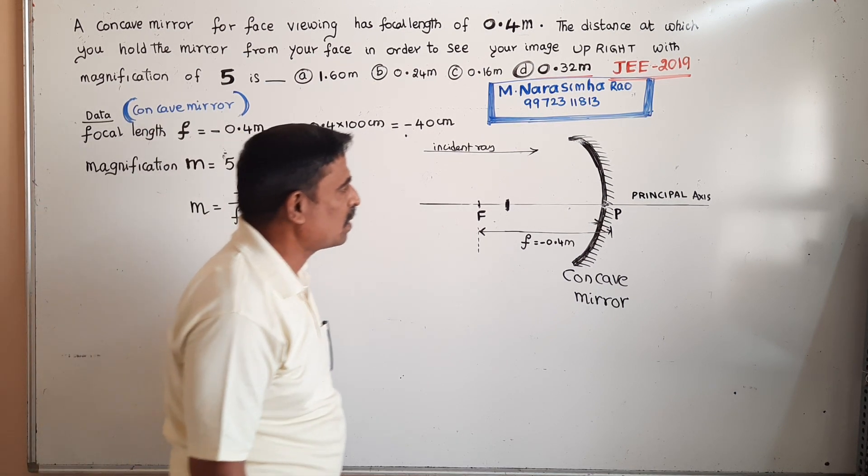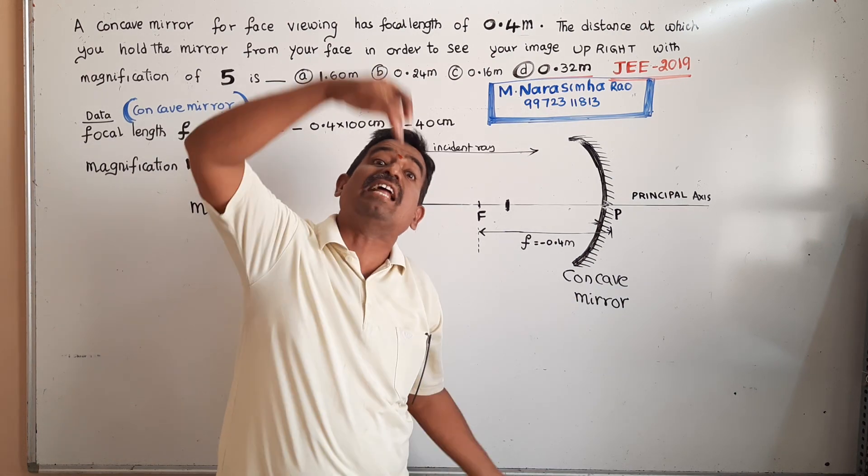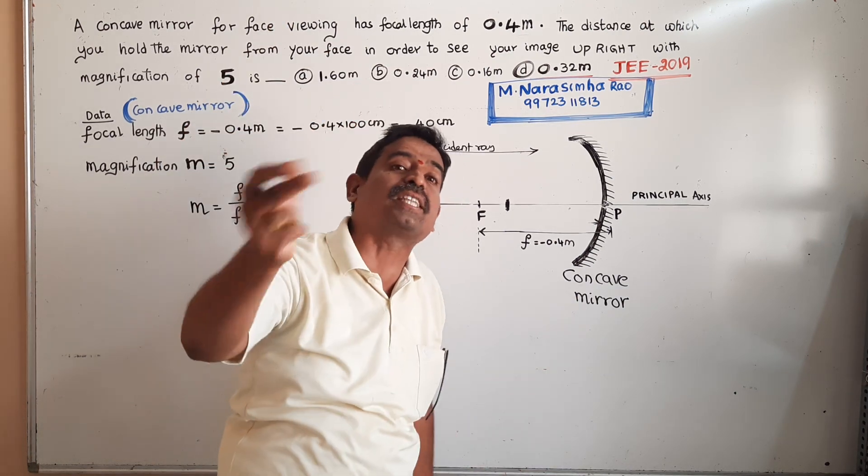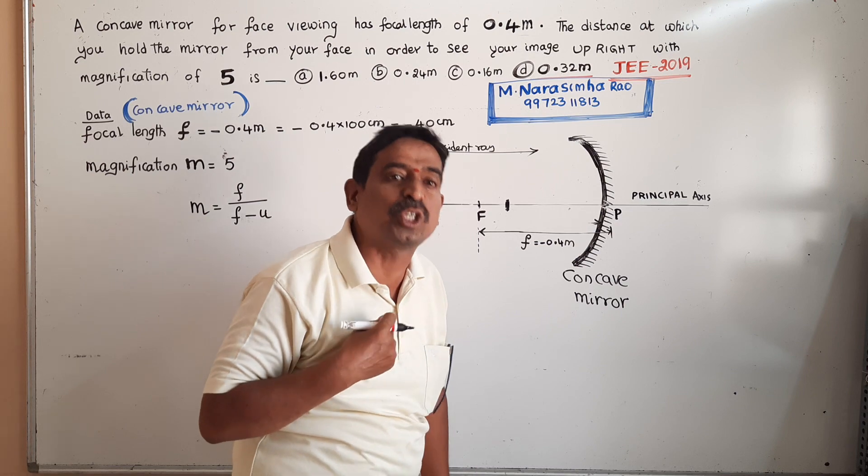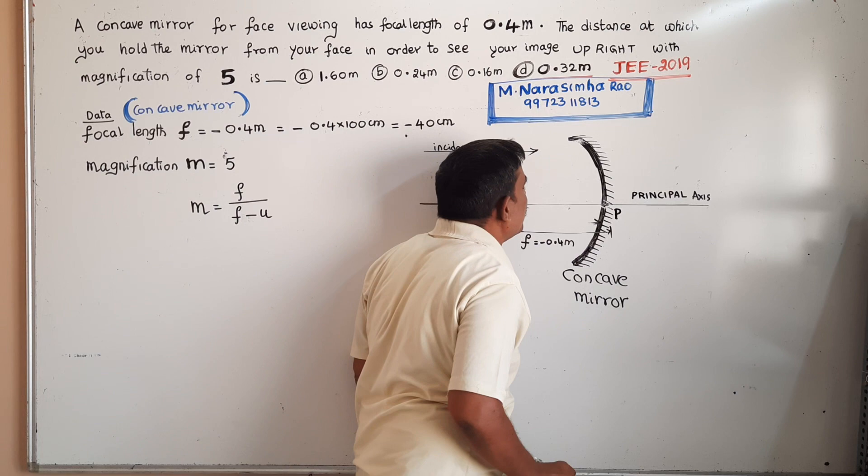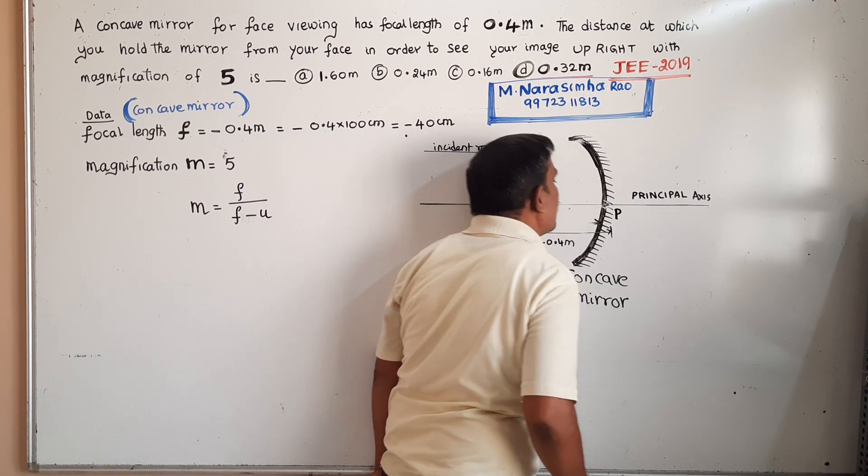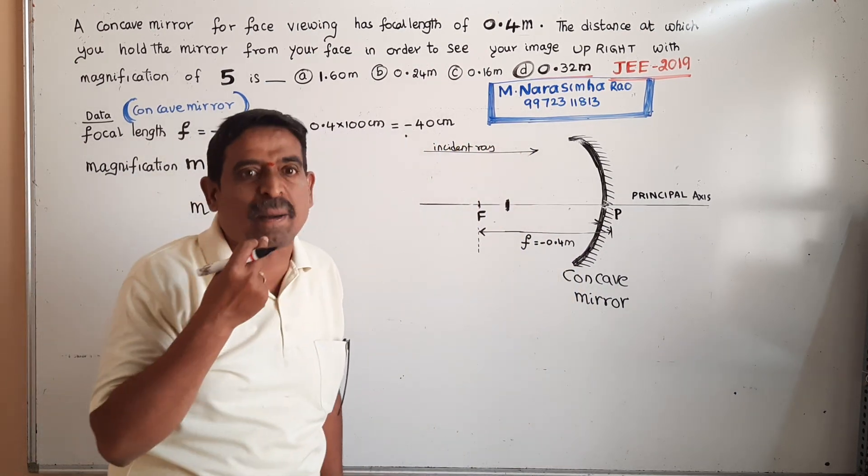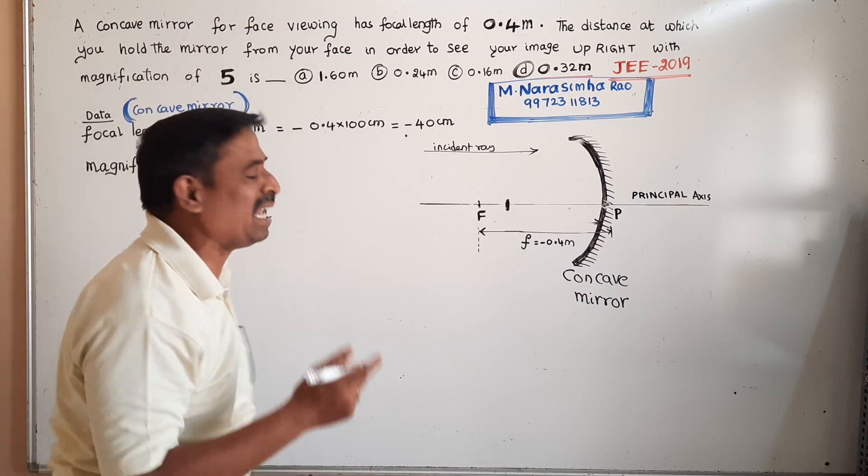The question is asking: to get a magnified image 5 times the size of the object, where should we keep our face in front of the mirror?